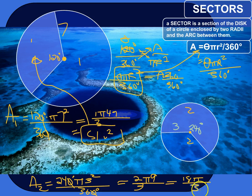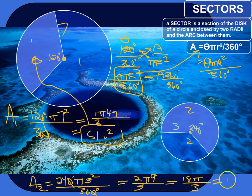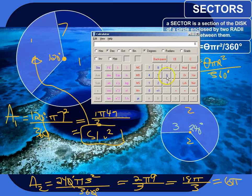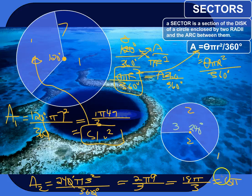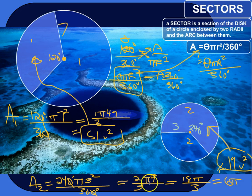That's 18 pi over 3. We can reduce that fraction: 18 over 3 is 6, so this simplifies all the way to 6 pi. And 6 times pi is approximately 18.84, so the area of that sector is roughly 19 units squared.